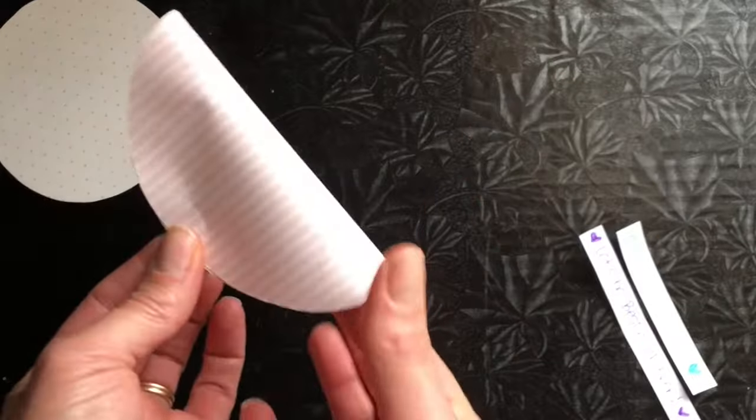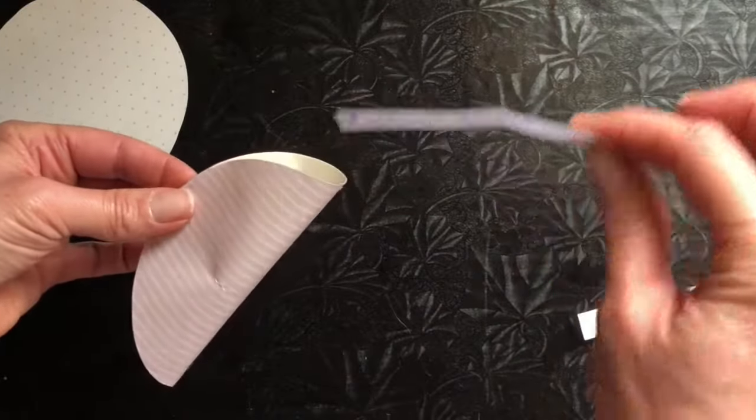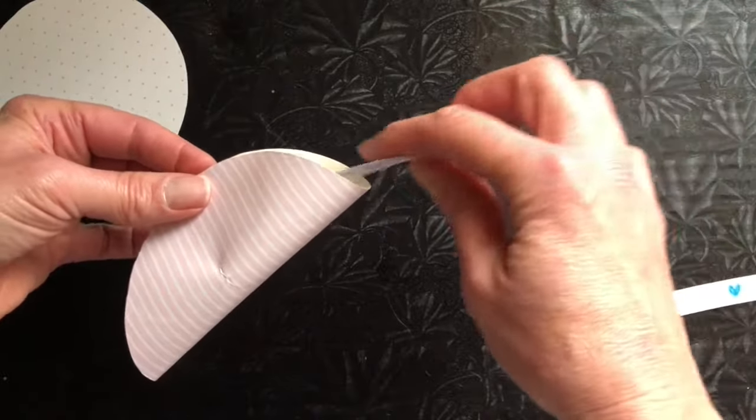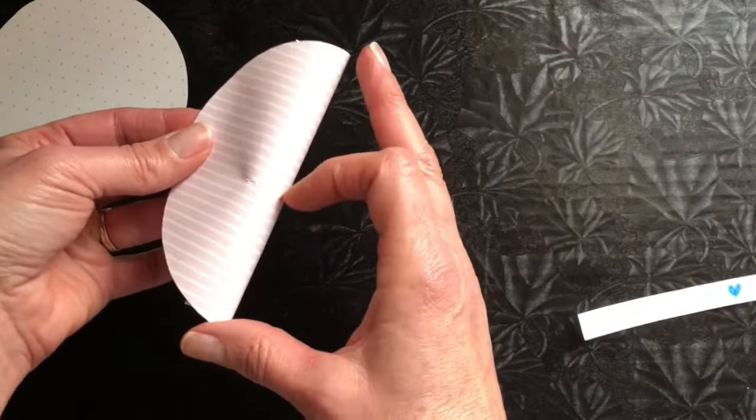Pop those creases out. So now we're going to put our message into the fortune cookie. And like we did before, we're going to press into the center.